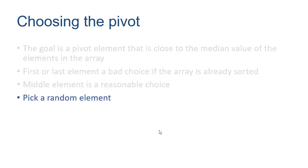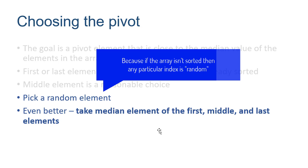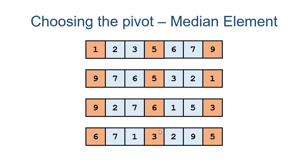We could also pick a random element, which is essentially as good as the middle element assuming the array isn't sorted. But an even better approach is to take the median of the first, middle, and last elements. We look at the array, grab those three values, and take their median.